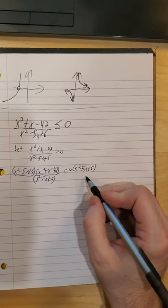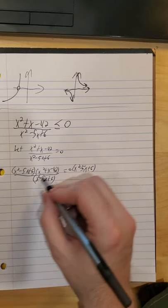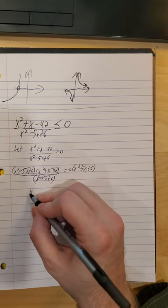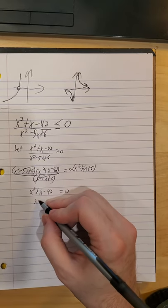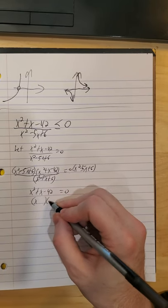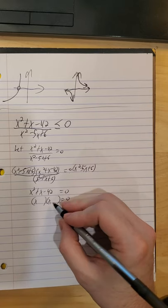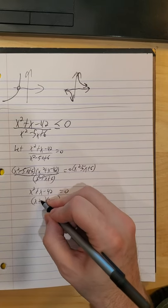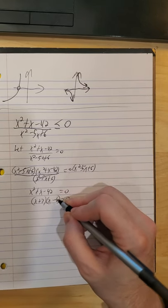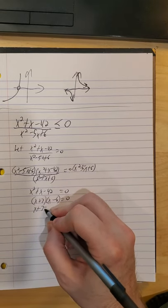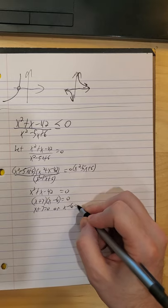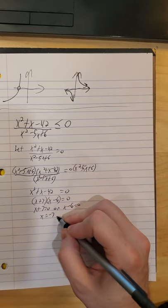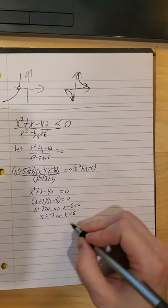0 times anything is 0. So the right-hand side is still 0. Left-hand side, we have our x squared plus x minus 42. So we'll go ahead and solve that. That one is actually factorable over the integers. So we have a positive 7 and a negative 6. So either x plus 7 is 0 or x minus 6 is 0. So x is negative 7 or x is a positive 6.